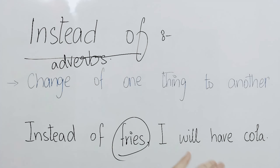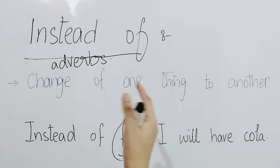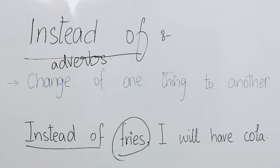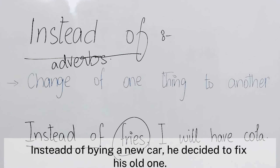You say: 'I will have a cola instead of fries.' Instead of fries, I will have a cola. So instead of is used here because you are exchanging one thing — fries — with the other — cola.